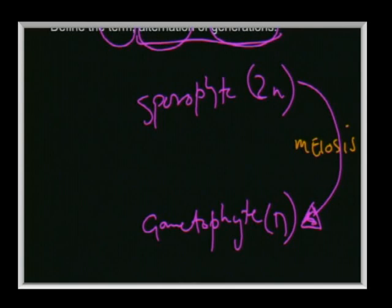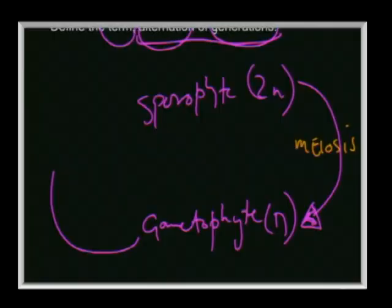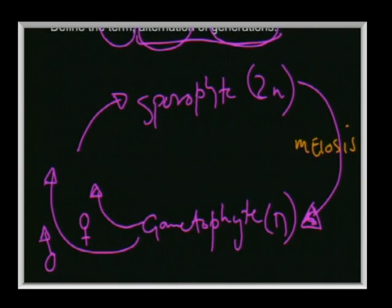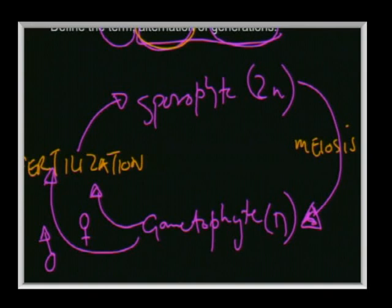The gametophyte produces gametes — the male gamete and the female gamete — which then lead to the production of a zygote through the process of fertilization. So the full answer for 'alternation of generations' is: it is the changing or switching between the sporophyte generation and the gametophyte generation. Looking at the illustration in the question, you actually have all your answers already.